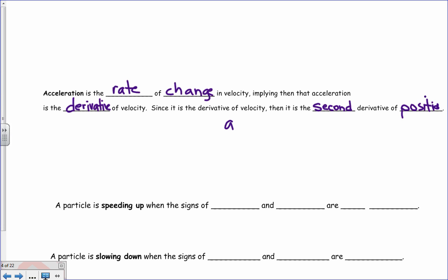So acceleration, we just said acceleration is the derivative of velocity. And then it's the second derivative of position. That's the relationship.